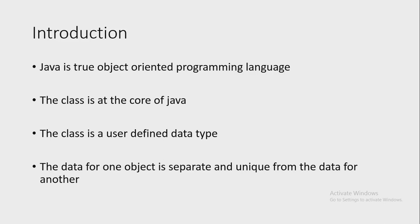Java classes create objects, and objects use methods to communicate between them. The class is a user-defined data type because it defines a new data type. In other words, a class is a user-defined data type, a template for objects, and an object is a variable of the class. The data or variables defined within a class are called instance variables.